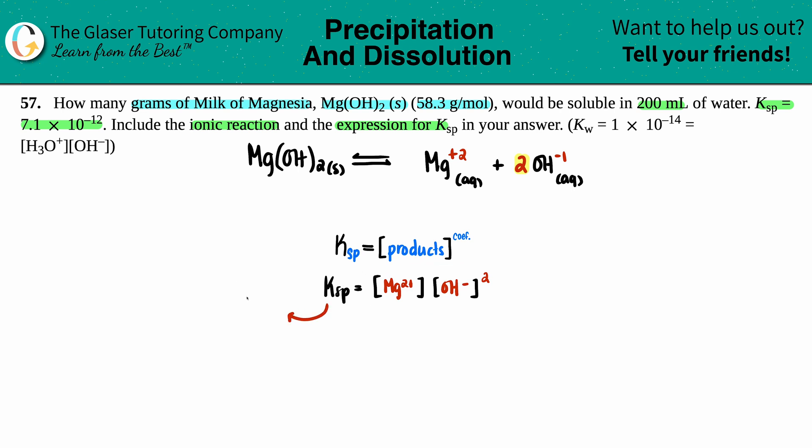They told me the Ksp value was 7.1 times 10 to the negative 12, but they did not tell me what the concentrations of the magnesium or the hydroxide are. Now we have to make up variables. I don't know what the magnesium is going to be, so I'll label it as x. Technically there was a one in front of the magnesium, so this would be one x, but one times x is just x. For the hydroxide, when we label this as x, the two has to come with it, so it'd be 2x.